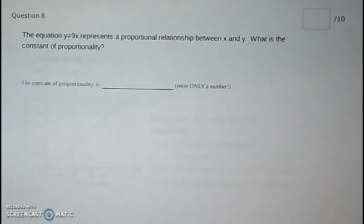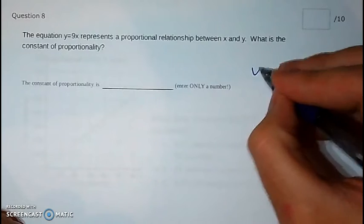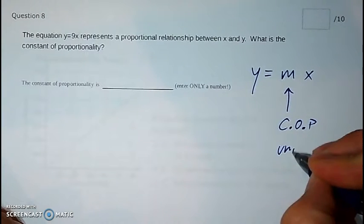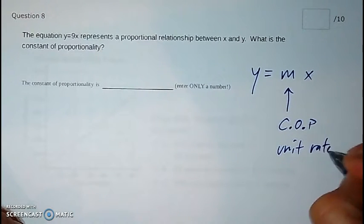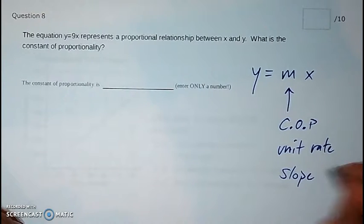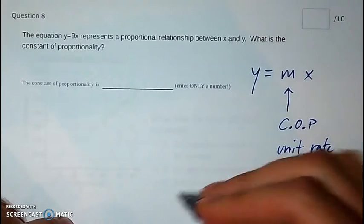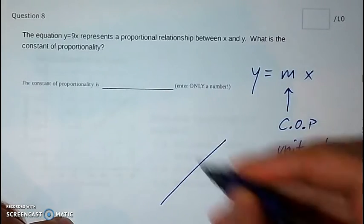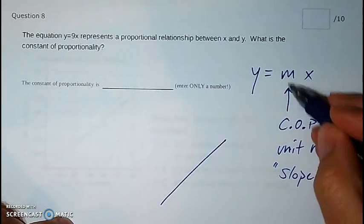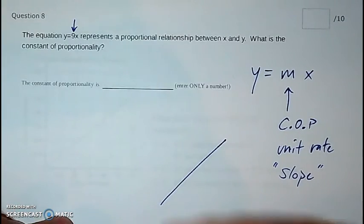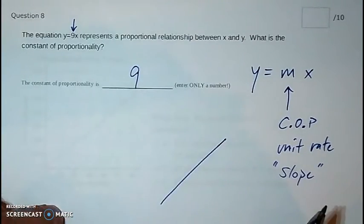Question 8: what's the constant of proportionality? It's something you have to memorize. Y equals mx — m is the constant of proportionality, it is the unit rate, and in 8th grade it's also the slope of the line; it's what makes the line steeper or less steep. So m is the constant of proportionality. Looking at the equation, it's 9 — the number that gets multiplied by x to give you y. Just enter 9.